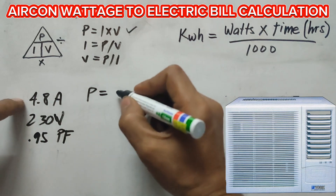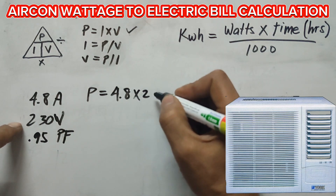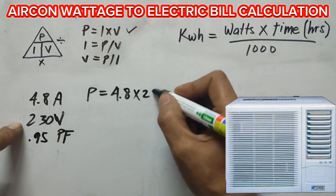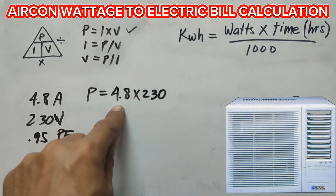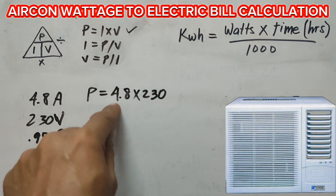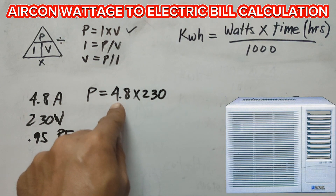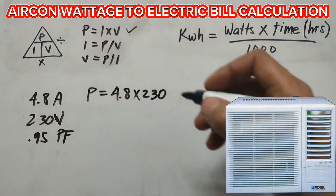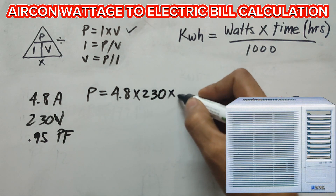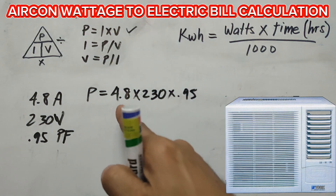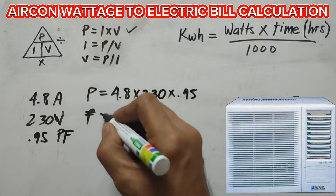We're going to apply the formula: P is equal to I times voltage times power factor. So P is equal to 4.8 times 230 volts. If you have 220V in your place, use 220. For example, in the Philippines it typically ranges from 3.5 to 3.8 ampere for one horsepower — use whatever ampere reading you got on your air conditioning unit. Then multiply by the power factor 0.95.